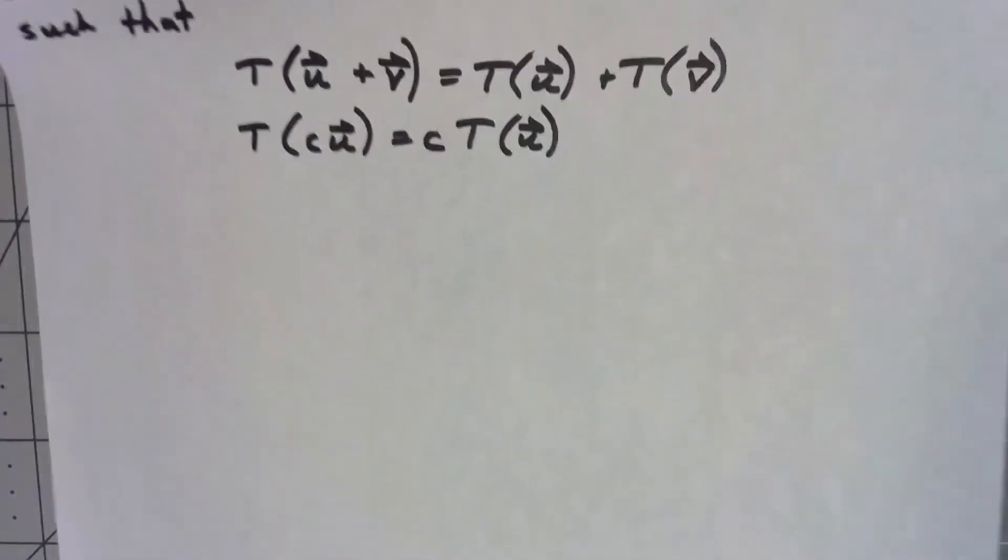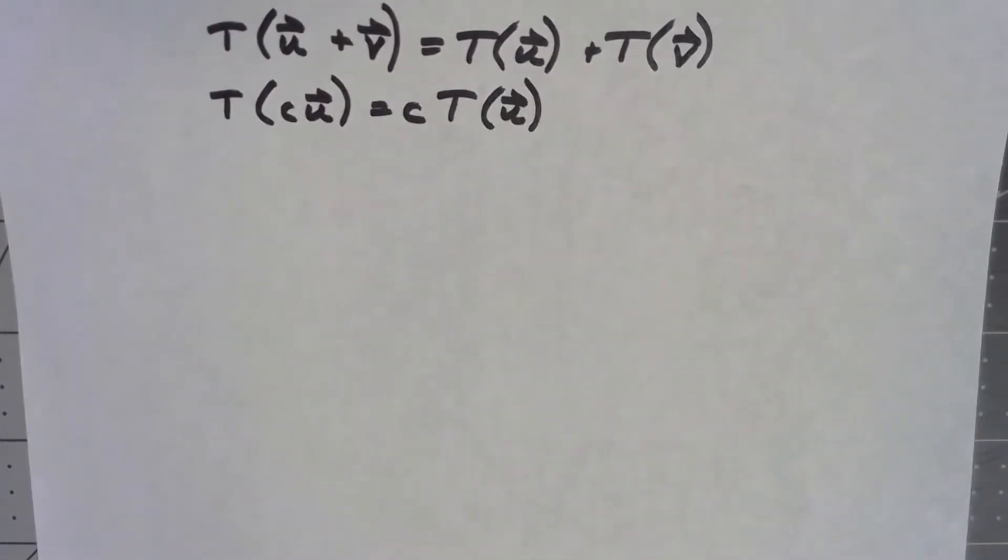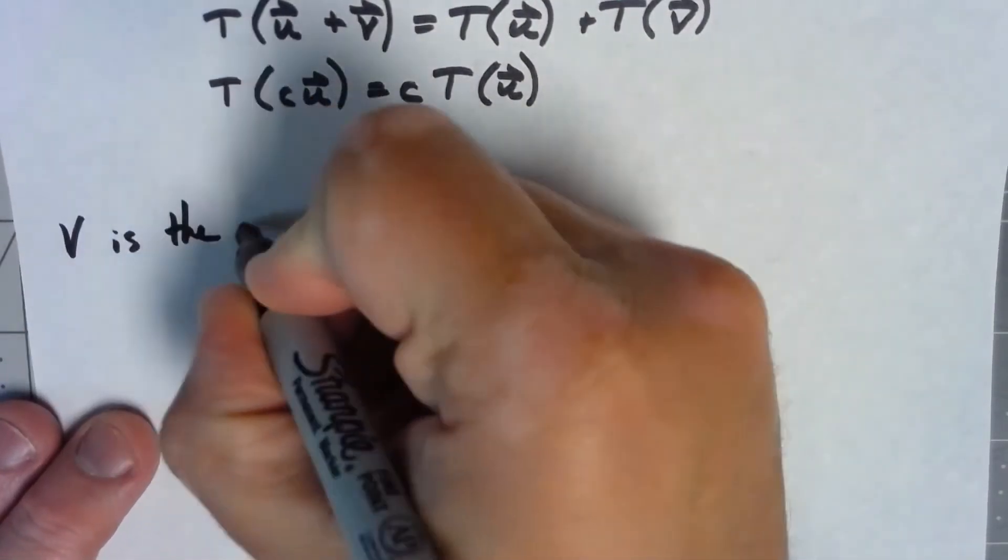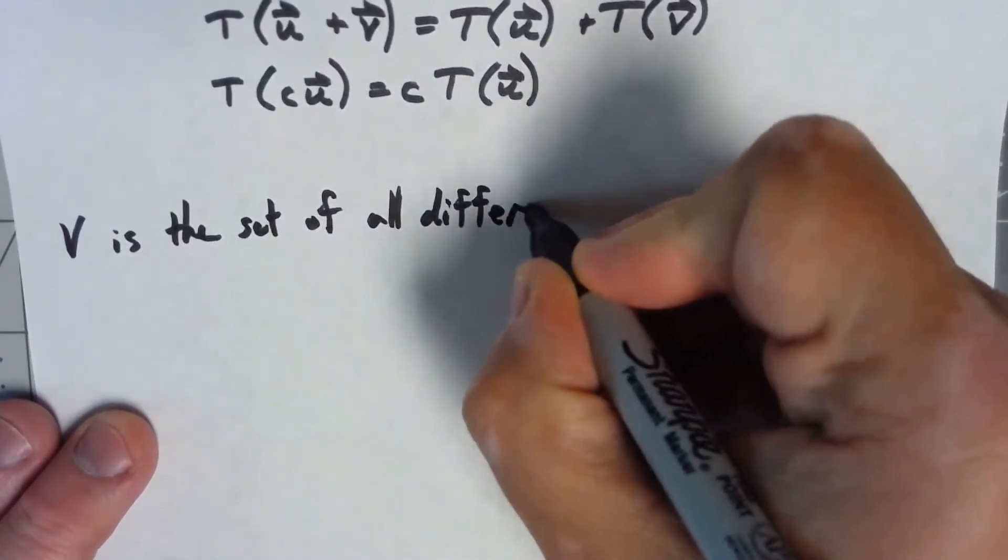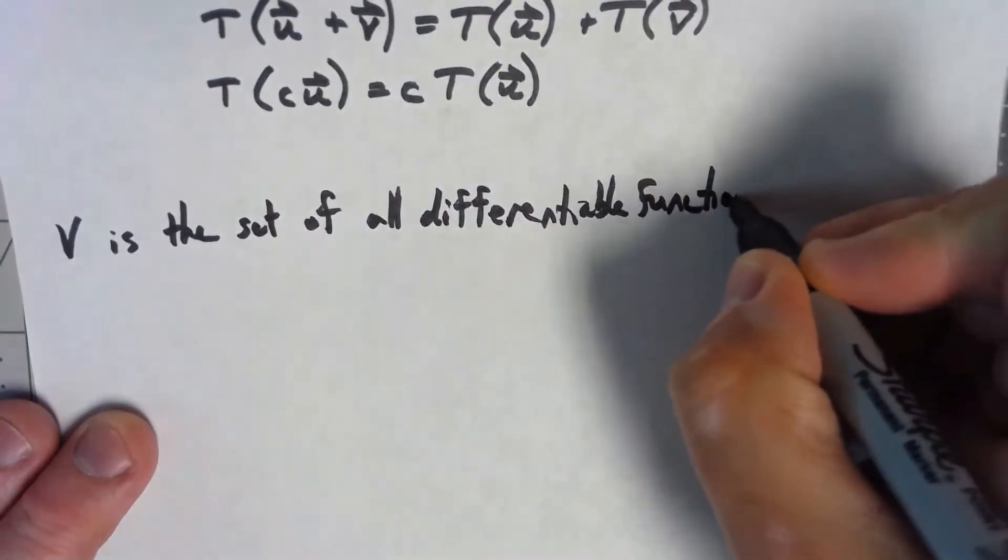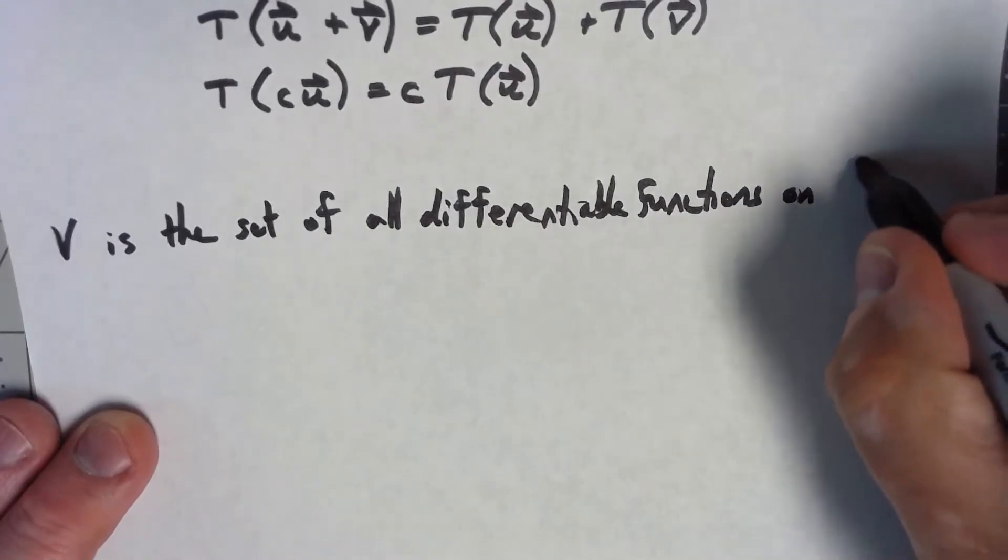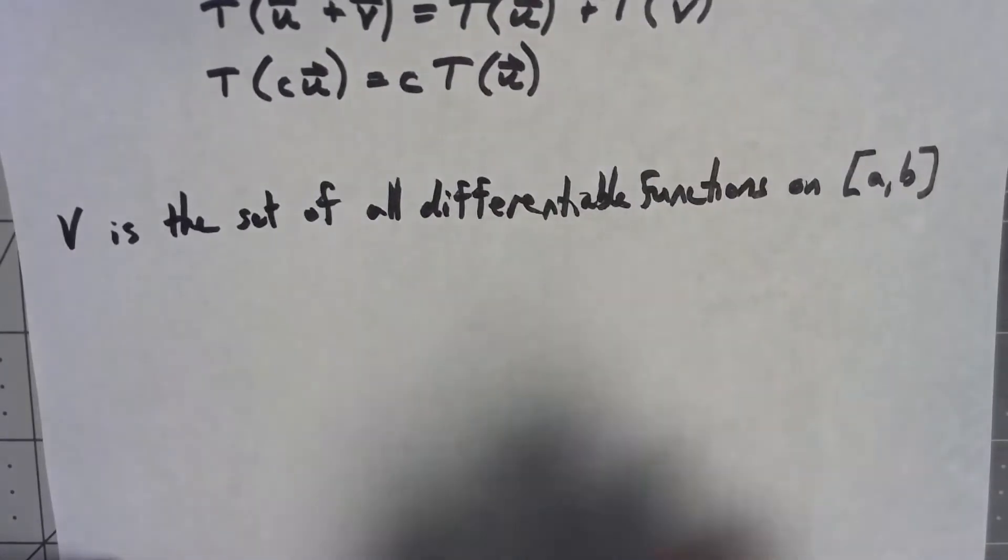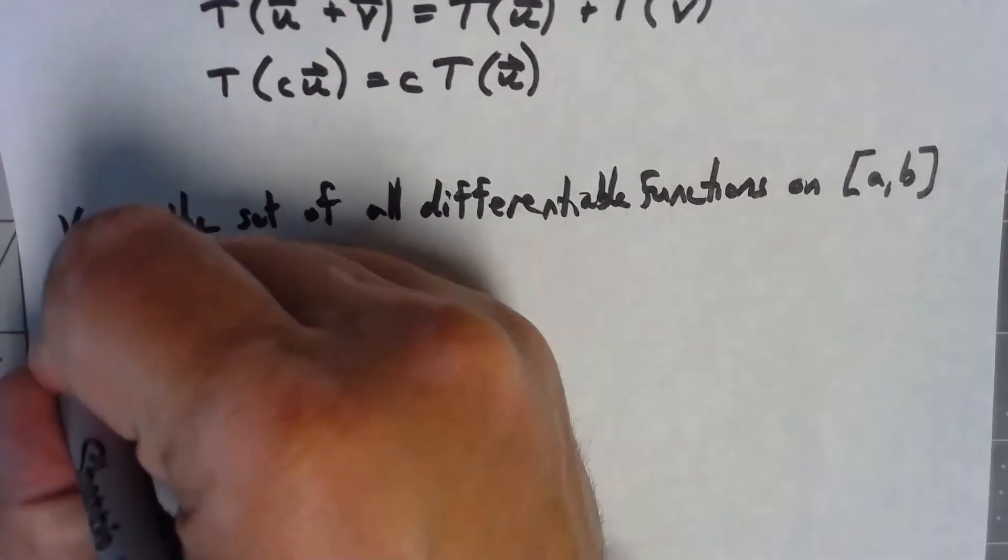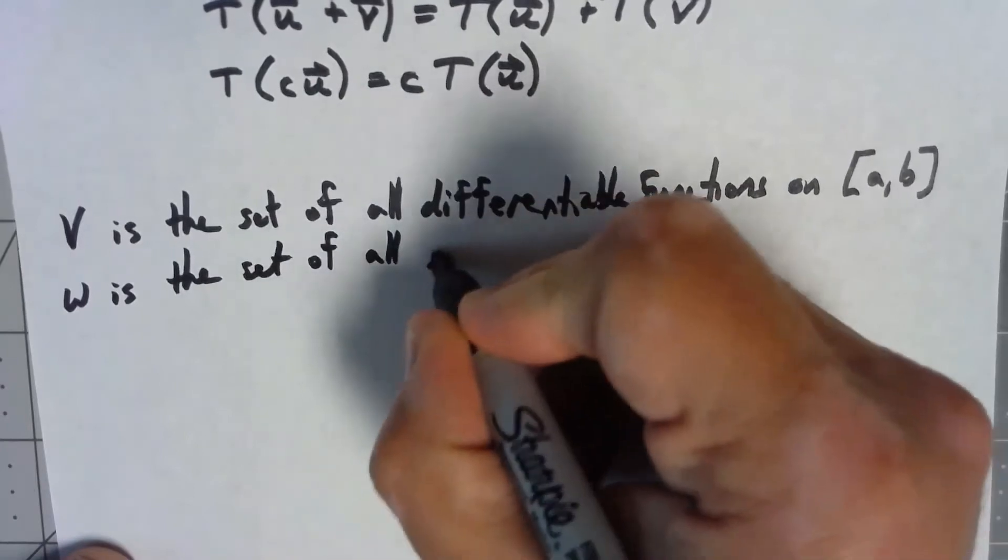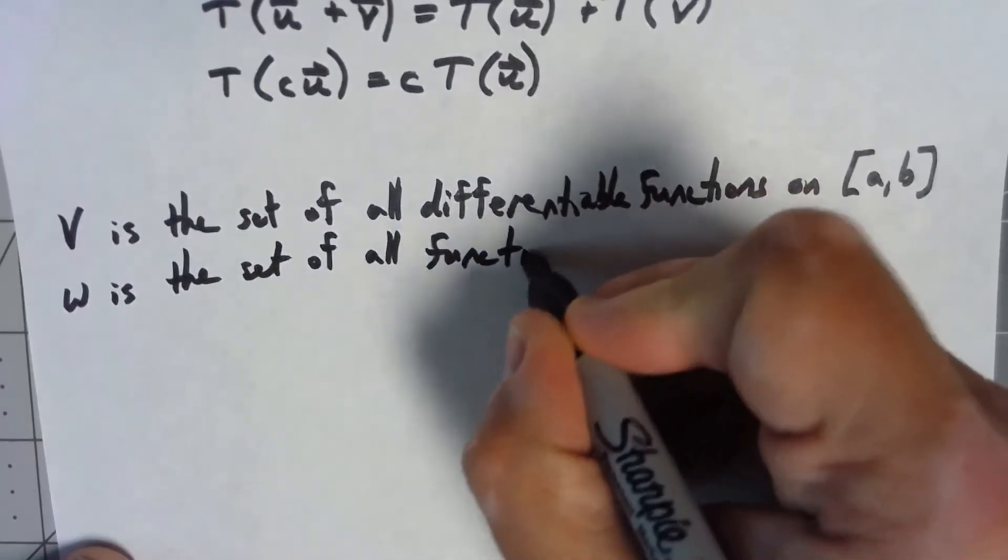Let's consider an example that doesn't use Euclidean Rn vectors. So let's go ahead and say V is the set of all differentiable functions on an interval from a to b. We could say differentiable everywhere, but just to make it more general, we'll say on an interval, and we'll say W is just the set of all functions on that same interval a to b.